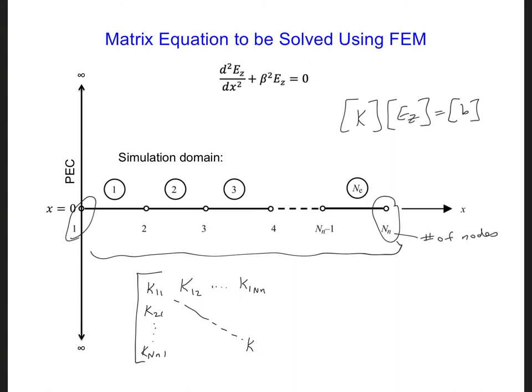Here we'll have knnnn, and all these coefficients will be multiplied by the ez array which is ez1, ez2 and so forth down to eznn, and that is equal to b1, b2 and so forth down to bnn.